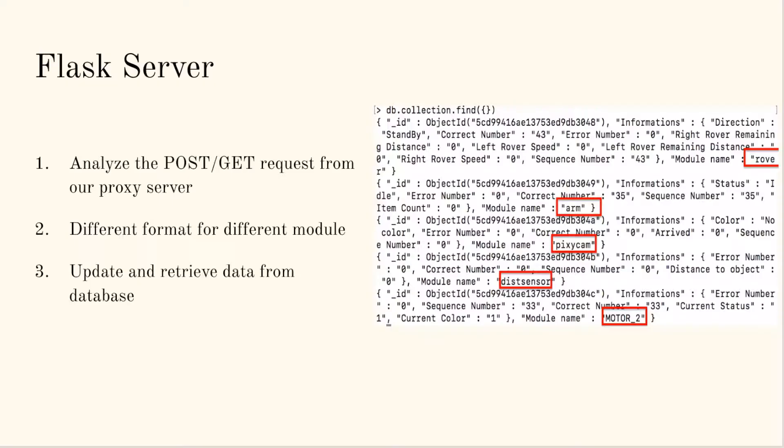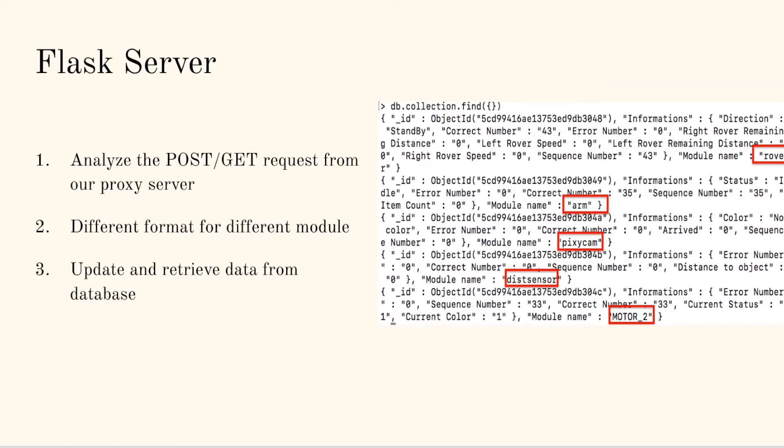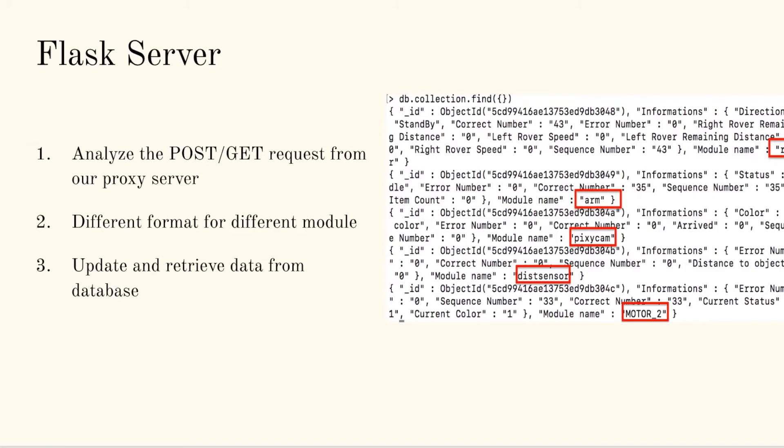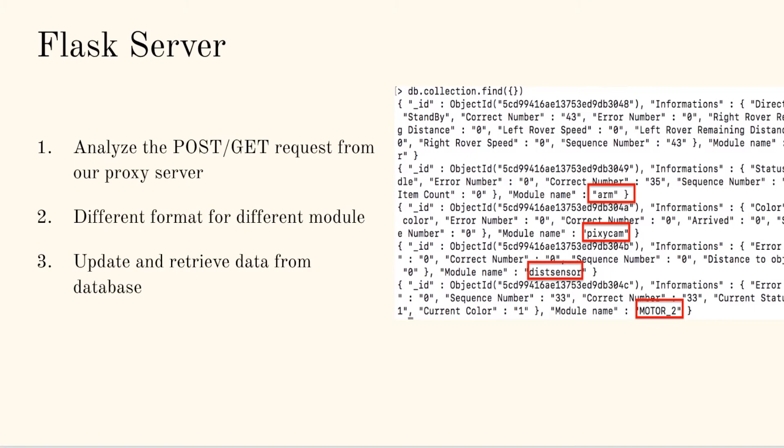In our flex server, we have a router to analyze requests from the proxy server. Depending on the content of requests, the flex server will store or retrieve the data from the database, and also update the number of correct messages or wrong messages in the database. Therefore, our two rovers and the arm are able to communicate with each other.